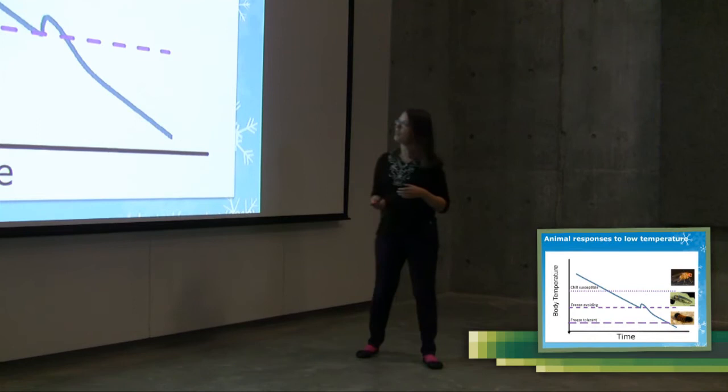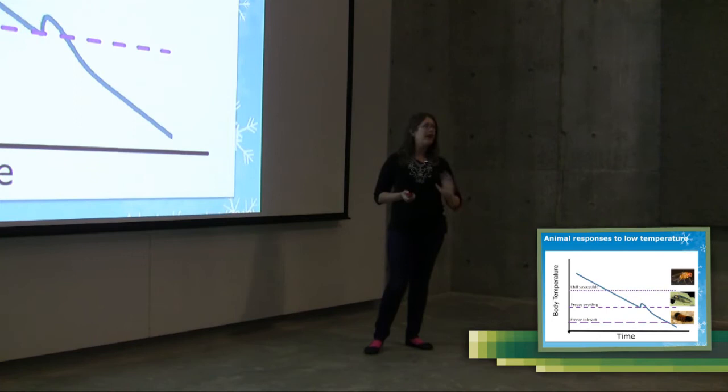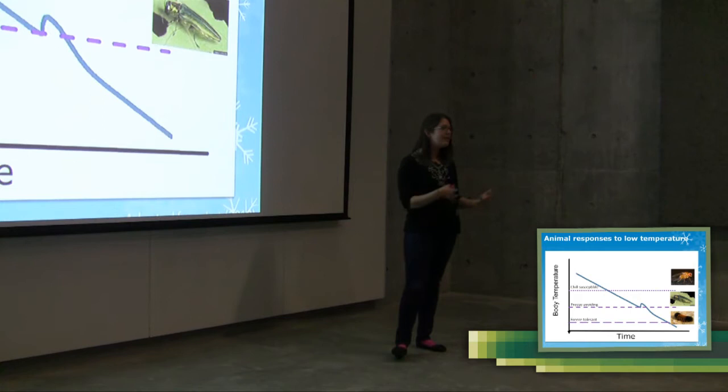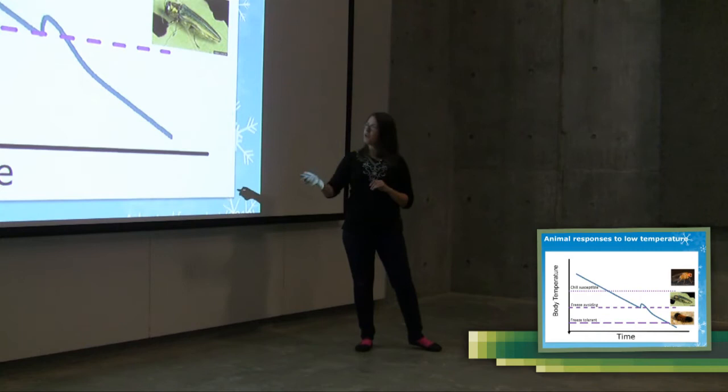Another group of animals are what we call freeze-avoiding. These are animals that can push down their supercooling point as far as possible and avoid freezing altogether. But if they freeze, they die. This includes animals like the emerald ash borer which is a really important invasive species in the middle of Ontario. This also includes things like the mountain pine beetle. You can push down that supercooling point as low as minus 40 degrees before it freezes.